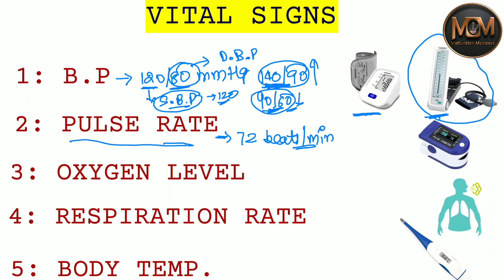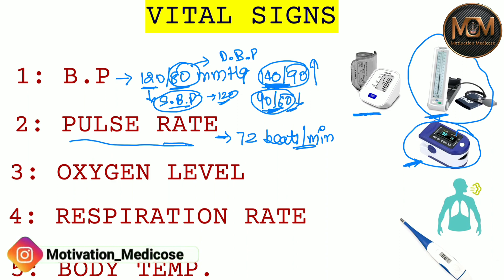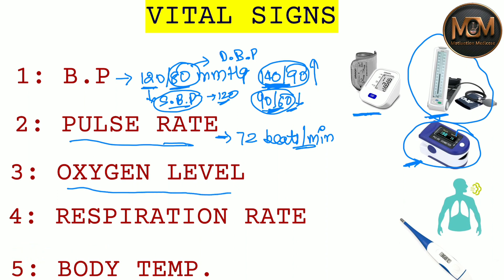We can check the pulse rate with the help of an instrument called the pulse oximeter. This pulse oximeter can check two things: the pulse rate and the oxygen saturation level as well.